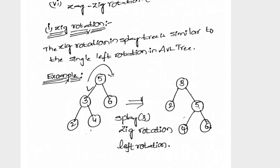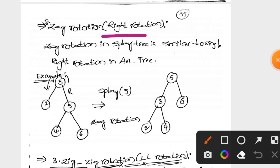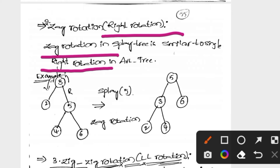The next rotation is the zag rotation. The zag rotation is the right rotation. Here is an example tree with elements 3, 2, 5, 4, and 6, where 3 is the root element. The operation to perform is splaying — specifically the splaying of element 5.